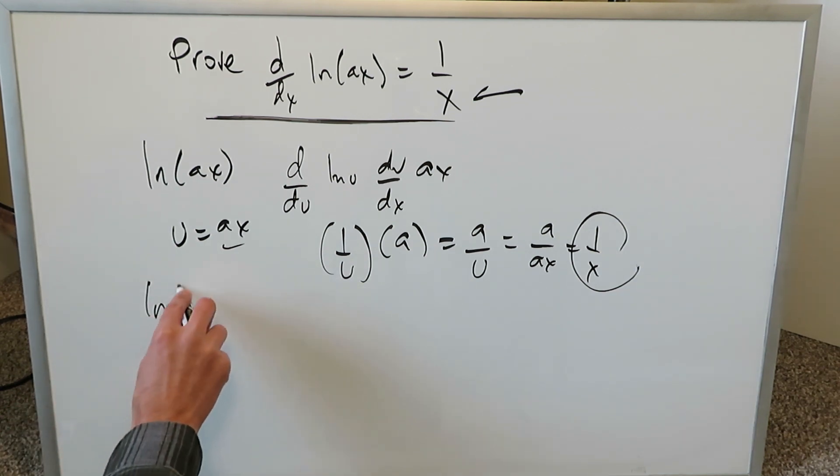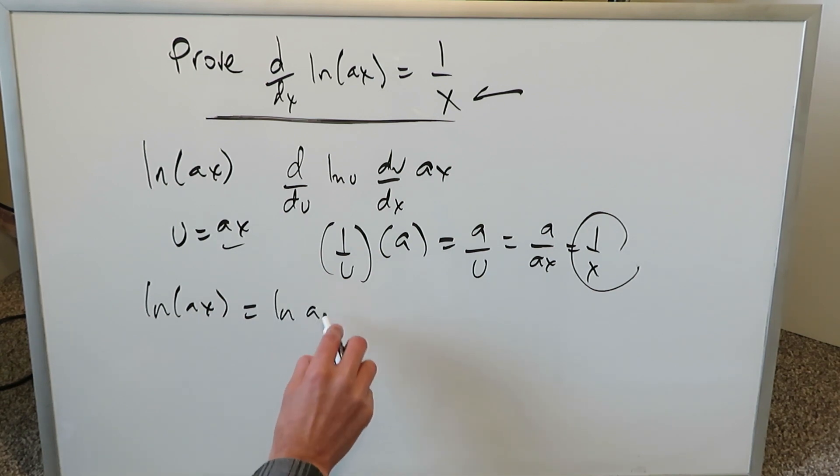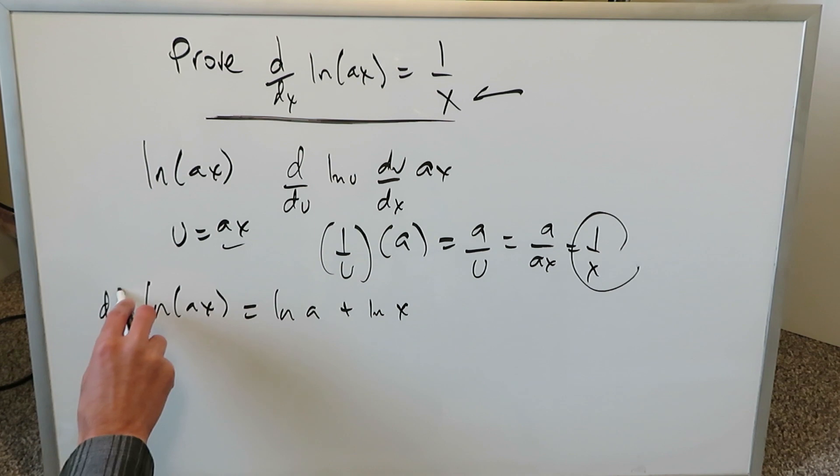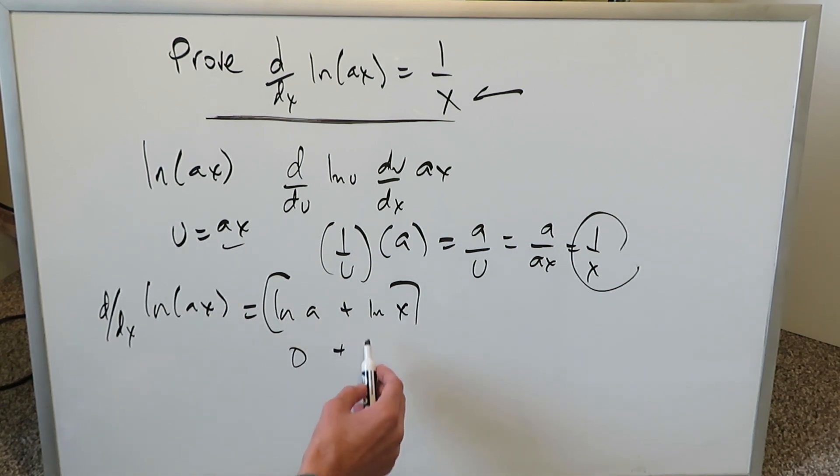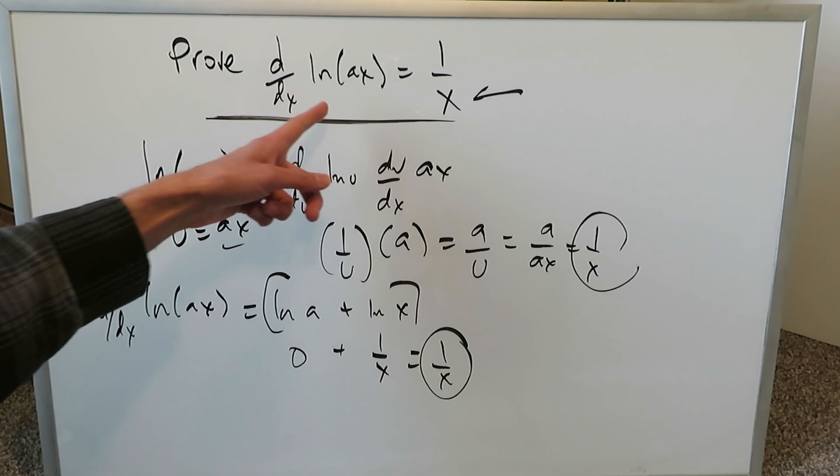In addition, anytime you have ln(ax), you can use the properties of logarithms and separate it out as ln(a) plus ln(x). And you know we were looking here in terms of the derivative. You could be applying the derivative to all of this. The derivative of a constant will always zero out and the derivative of ln(x) will just come out as 1 over x and again you end up with 1 over x. But here these are just very easy ways of showing that this is equal to that.